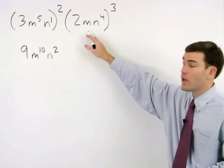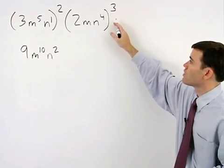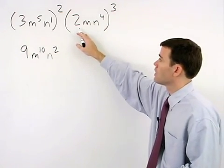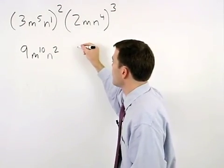To simplify 2mn to the fourth cubed, we would first cube our coefficient of 2 to get 2 times 2 times 2, or 8.